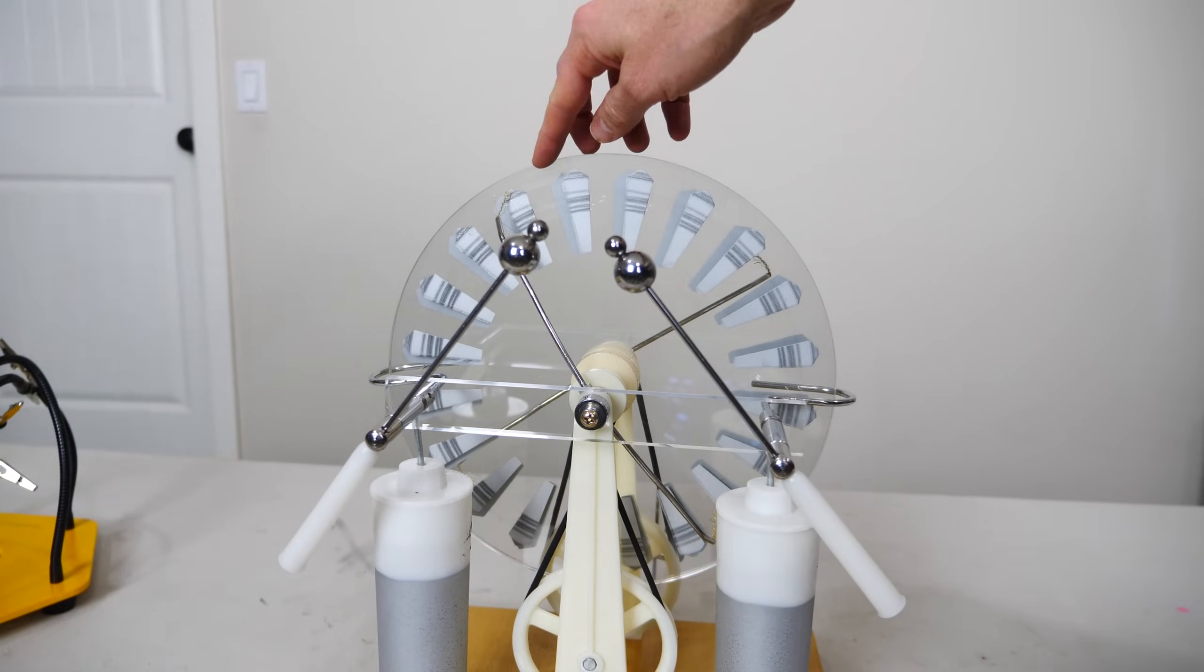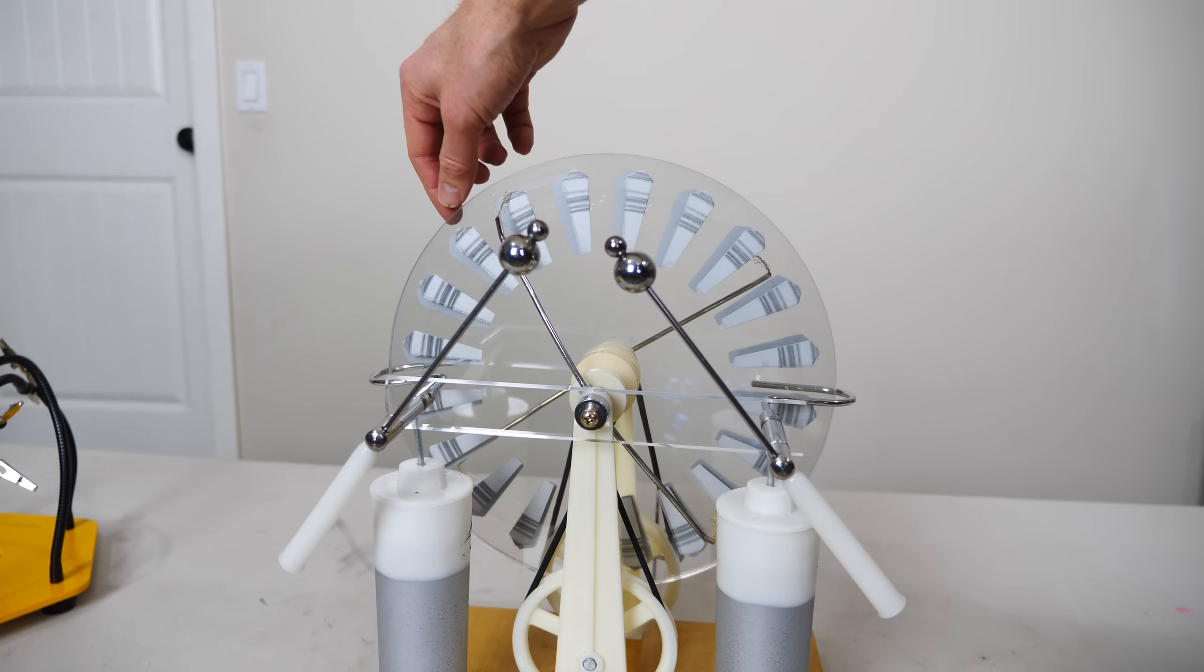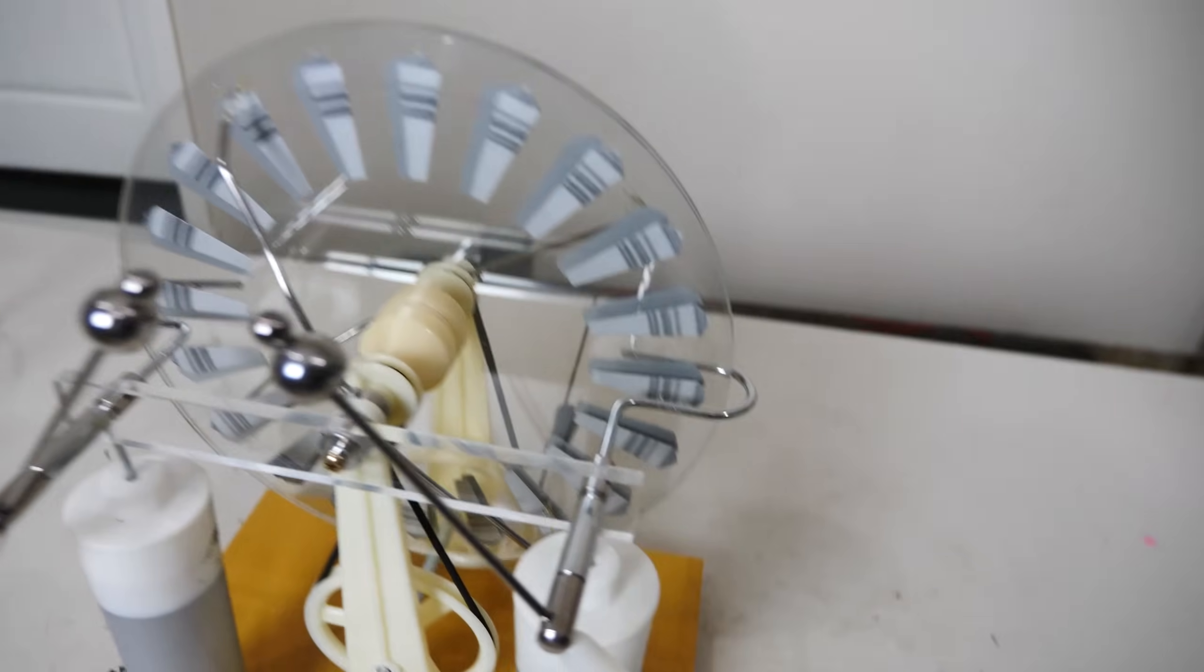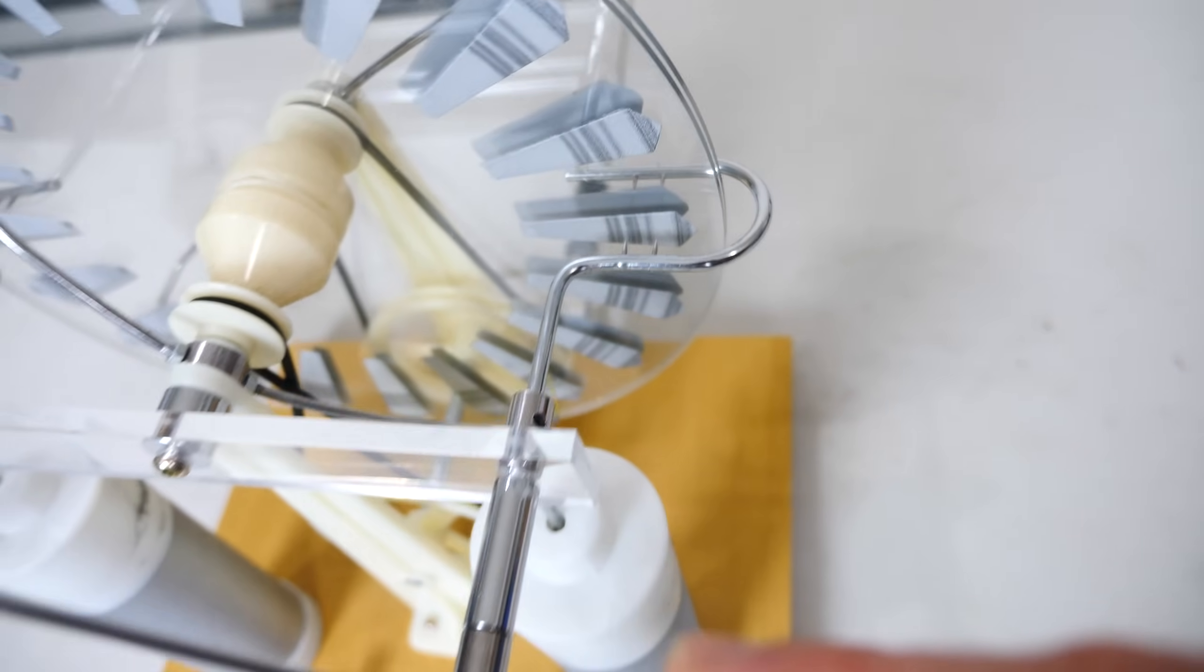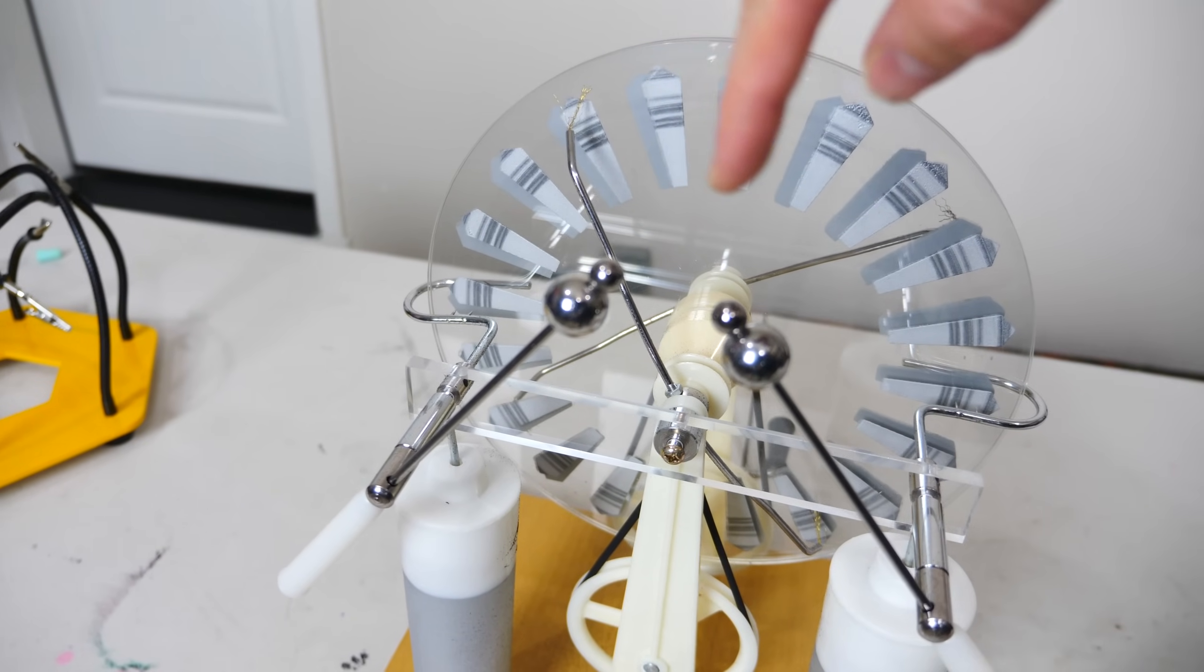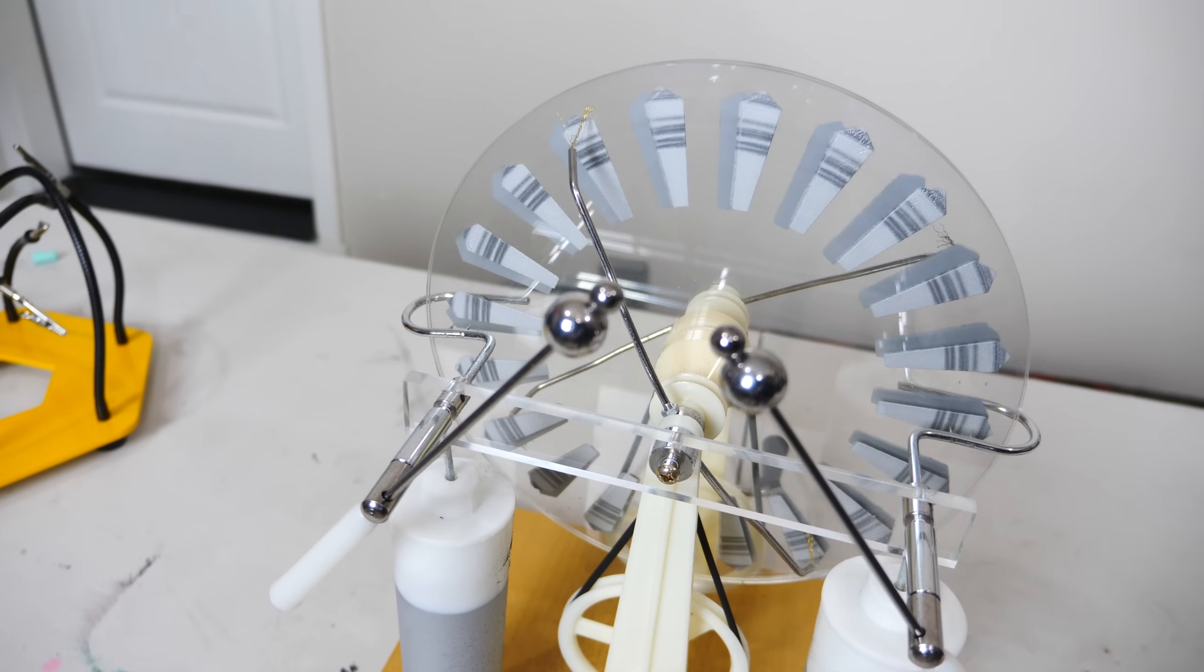So the Wimshurst machine works through electrostatic induction. It charges these metallic plates here. As they turn, they get more and more charged. And the charge gets picked up by these really sharp points here. And the points charge these Leyden jars on the end until eventually a dielectric breakdown of the air happens and they neutralize.